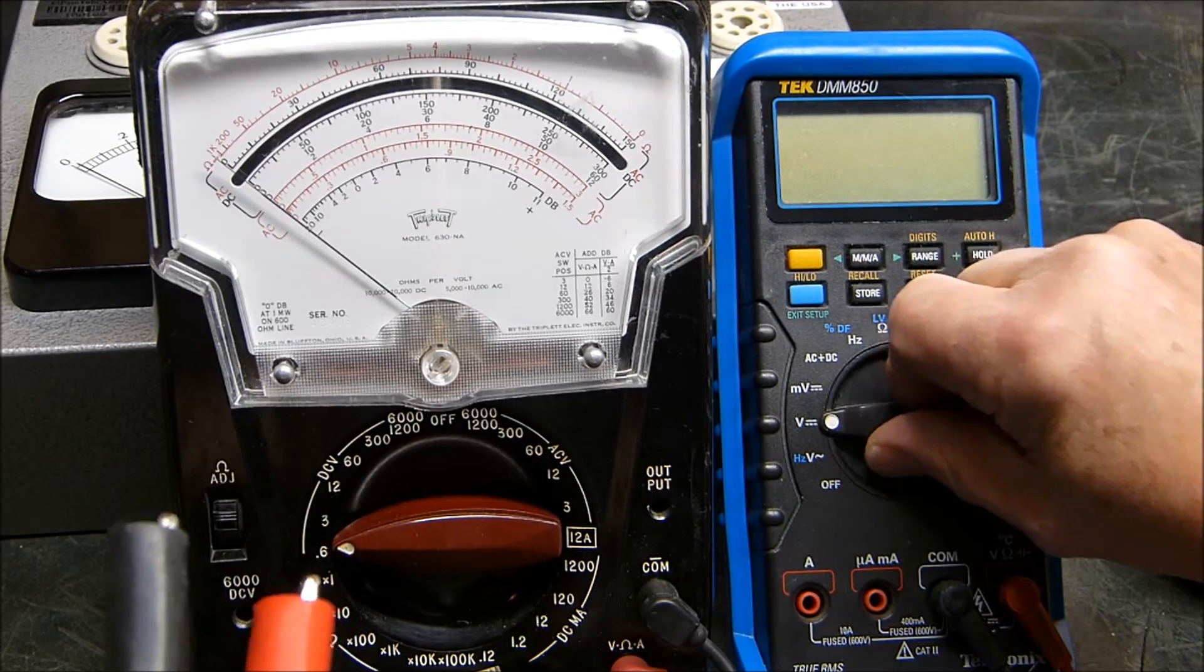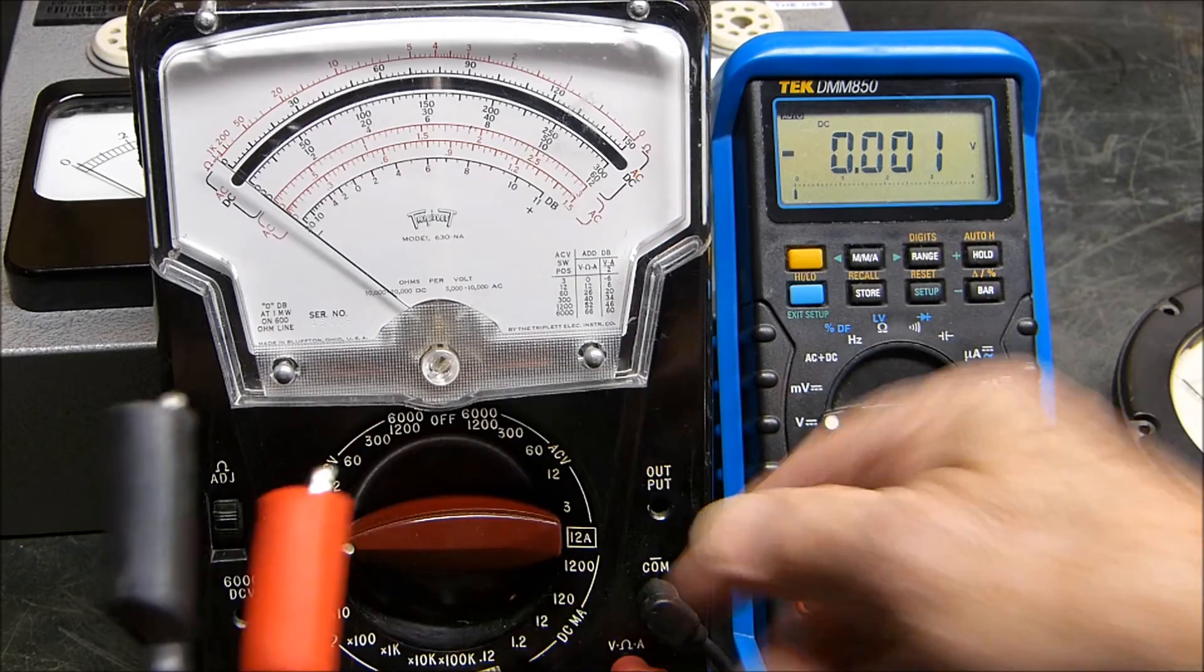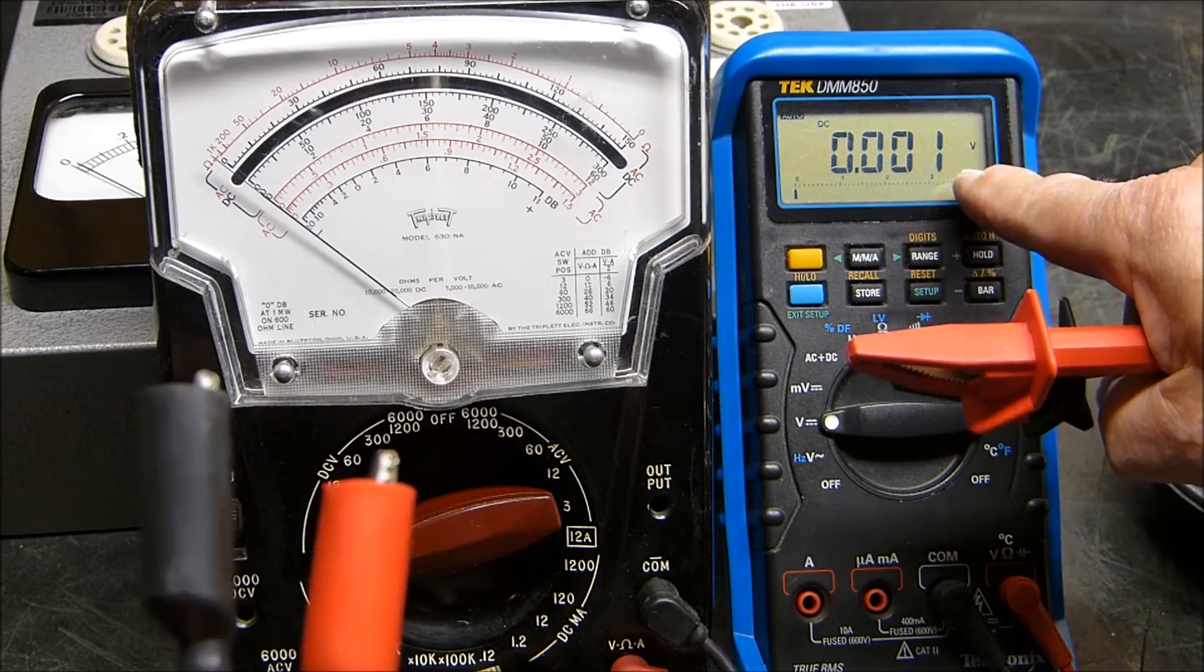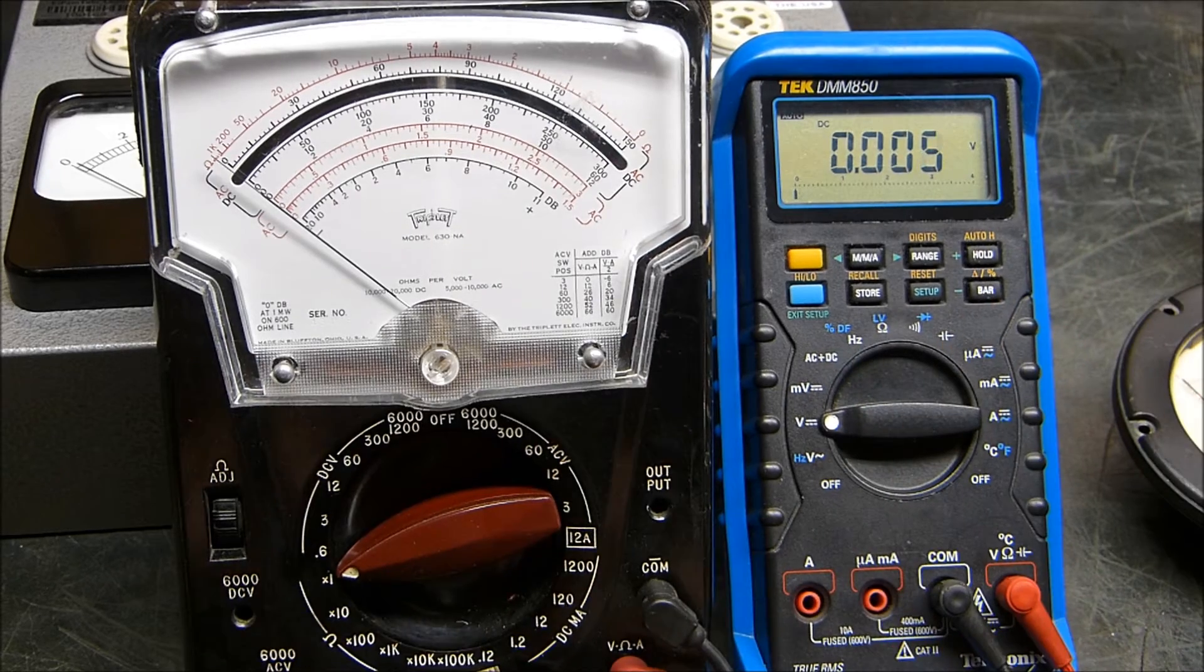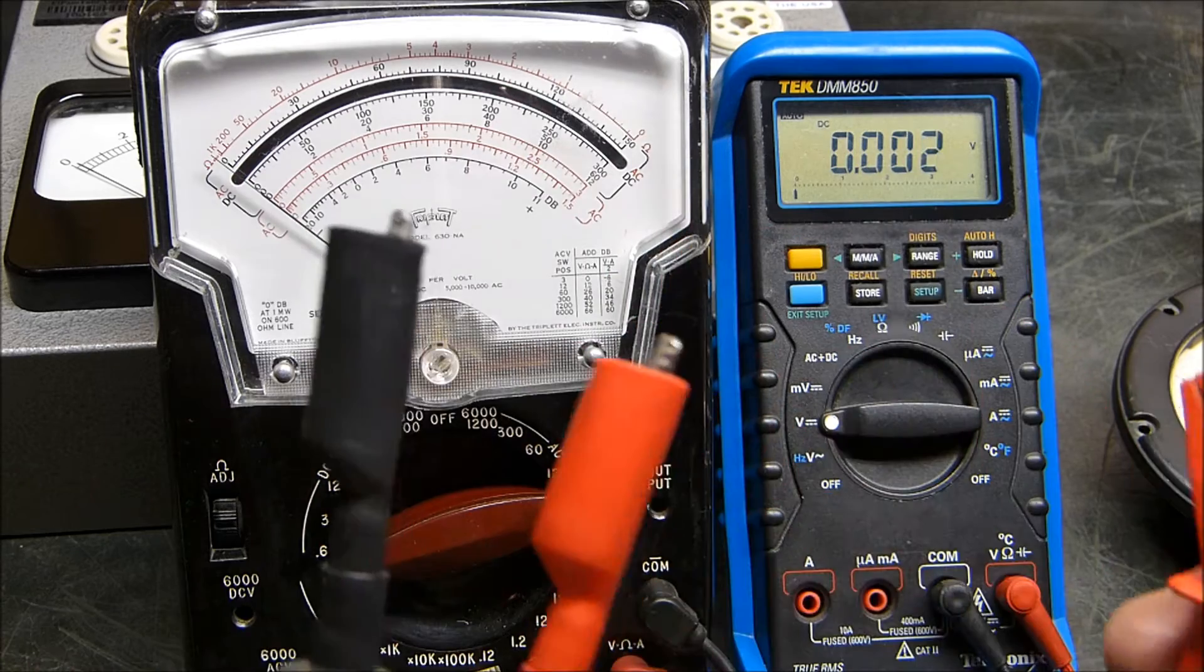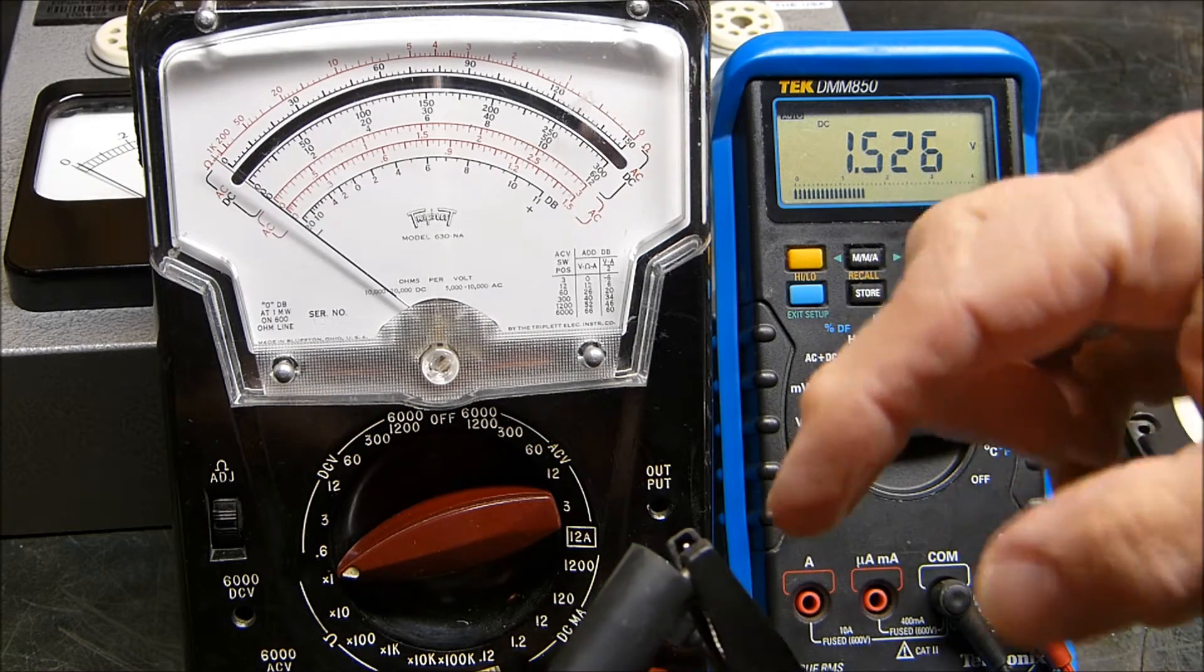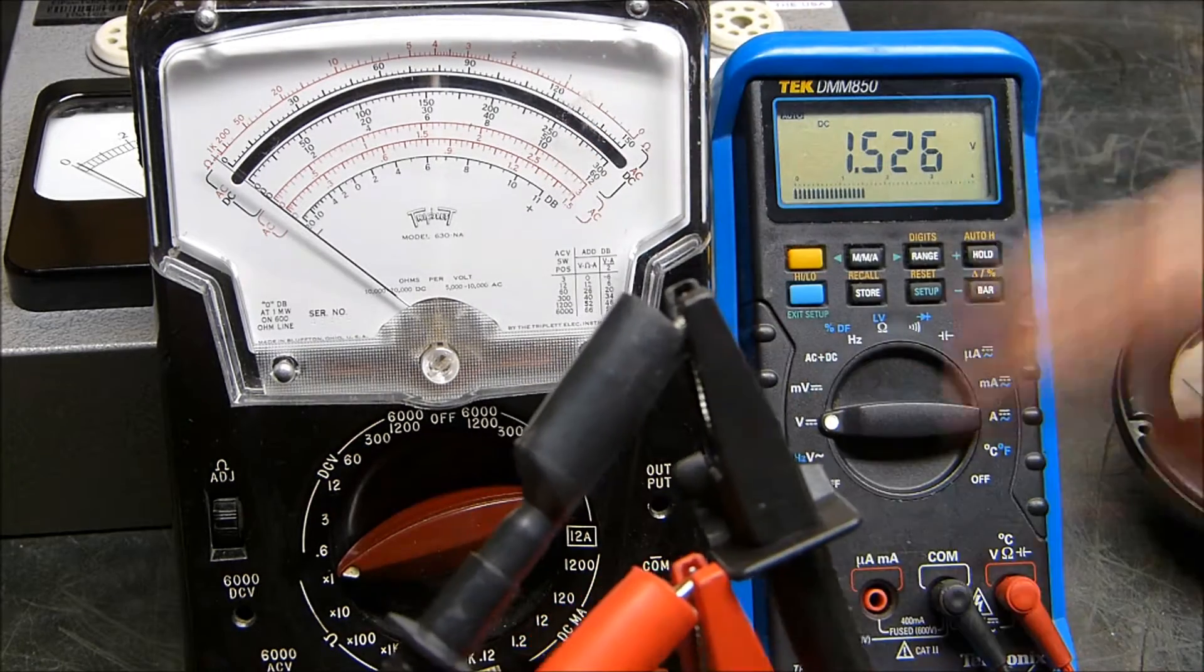If we put our voltmeter, something really high impedance, and we put this thing on R times 1, remember we have a 1.5 volt battery in here. Look at the open circuit voltage. When we connect this as a voltmeter across this as a resistance meter, look at our voltage. See, we have a volt and a half open circuit voltage right here coming out of this meter.